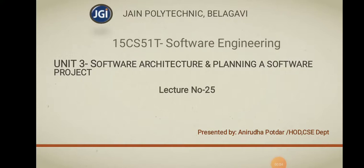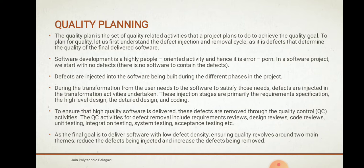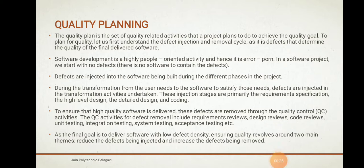Hello everyone, my name is Ana Rapoddar. Today we are going to discuss Unit 3: Software Architecture and Planning a Software Project. The contents we are going to discuss in this video are quality planning and risk management planning. Quality planning is the set of quality-related activities that a project plans to do to achieve the quality goal.